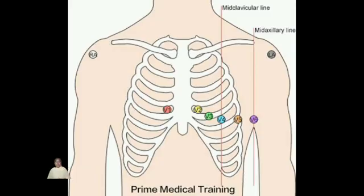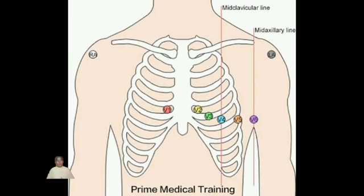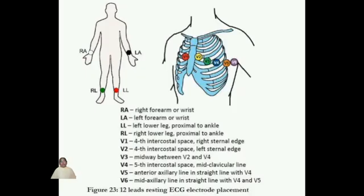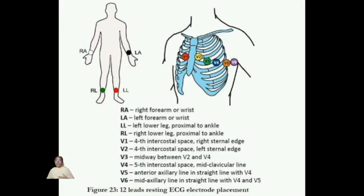In electrocardiography, the placement of electrodes is crucial for accurate cardiac monitoring. Standard placement involves attaching electrodes to specific areas on the patient's chest, arms, and legs. There are 10 electrodes in total: right arm (RA) placed on the right arm, right leg (RL) placed on the right leg, left arm (LA) placed on the left arm, and left leg (LL) placed on the left leg. These four electrodes are the limb leads. Additionally, there are six precordial chest leads, V1 to V6, placed across the chest, each corresponding to specific intercostal spaces.